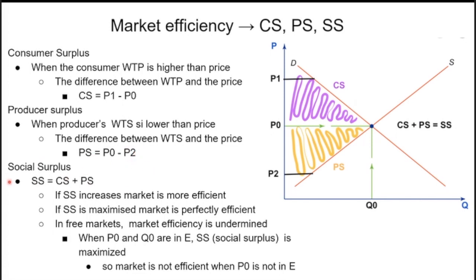Social surplus is the addition of consumer surplus and producer surplus. When social surplus increases, the market is more efficient; when it is maximized, the market is perfectly efficient, with no deadweight loss. In free markets, market efficiency is achieved when P0 and Q0 are at equilibrium, meaning social surplus is maximized. If the market is not at equilibrium, it is not efficient.